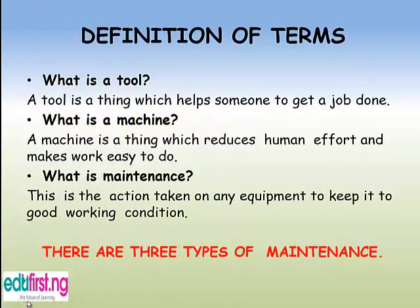Definition of terms. What is a tool? A tool is a thing which helps someone to get a job done. What is a machine? A machine is a thing which reduces human effort and makes work easy to do. What is maintenance? Maintenance is the action taken on any equipment to keep it working.